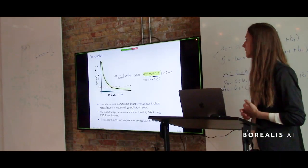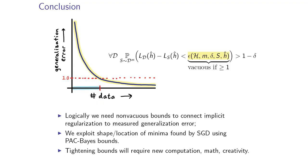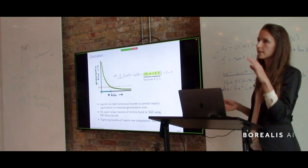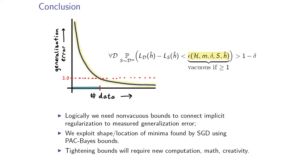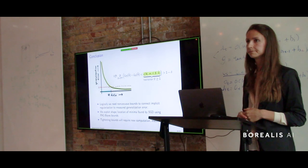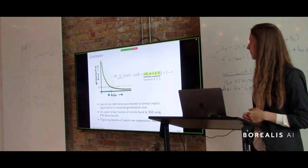In summary, we need non-vacuous bounds to connect implicit regularization to measured generalization error — if our bound is above 1, it doesn't tell us much. In our work, we explore the shape and location of the minima found by stochastic gradient descent using PAC-Bayes, which allows us to relate flat minima to generalization. These bounds can be tightened quite a bit, and that will require both computation and creativity.